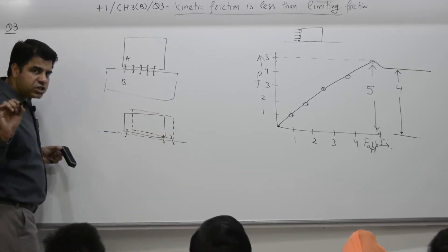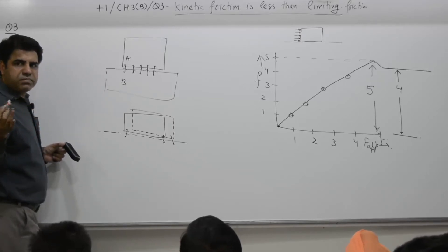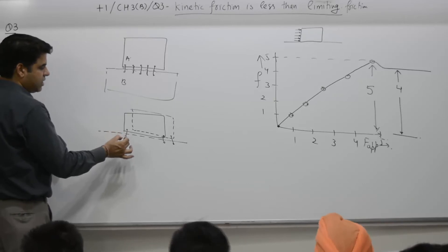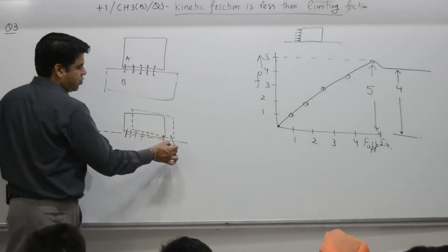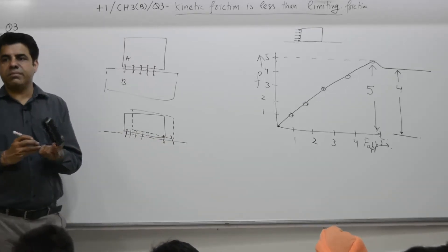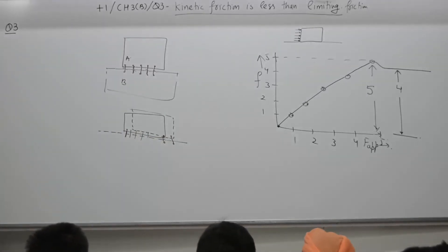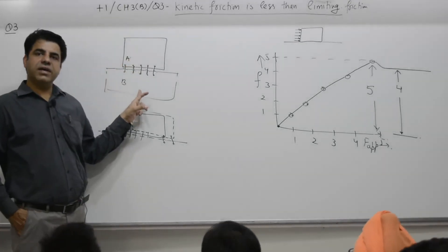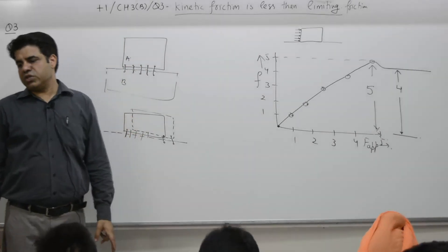Break and make or whatever it is make and break process. Underline that. The process is break, these bonds will break and new bonds formation will take place. Because the process is very fast, that is why the bond is not as strong as in this case. That is why limiting friction is more in comparison to kinetic friction.